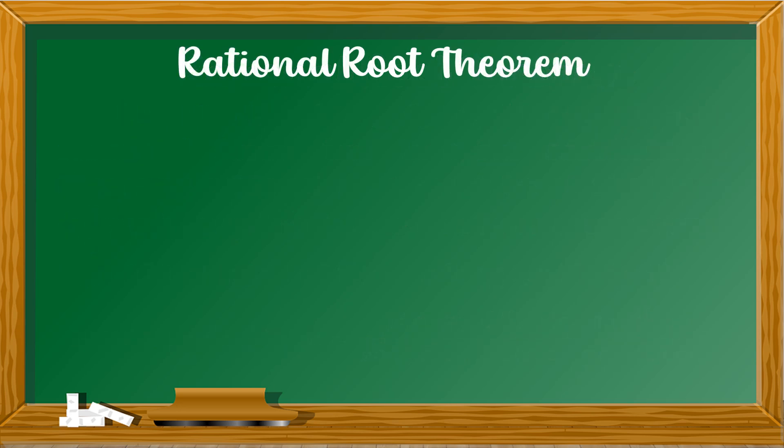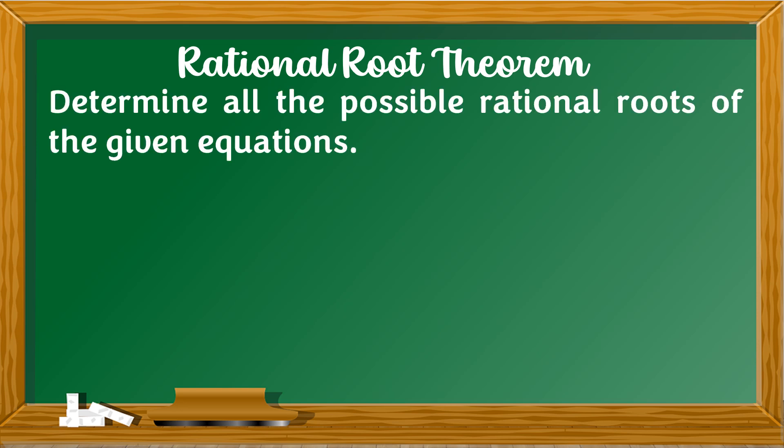Let's now look at examples of the Rational Root Theorem. We will determine all the possible rational roots of the given equations. In example number 1, we have x squared minus 5x plus 6 equals 0.